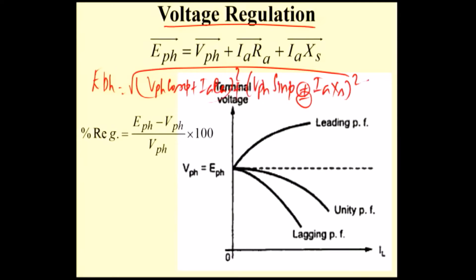Why is it decreasing? Because three factors affect the terminal voltage: that is Ia·Ra drop, then Ia·XL drop, then Ia·Xar drop. So the terminal voltage is not equal to E-phase. The percentage regulation formula is: percentage regulation = (E-phase − V-phase) / V-phase × 100.